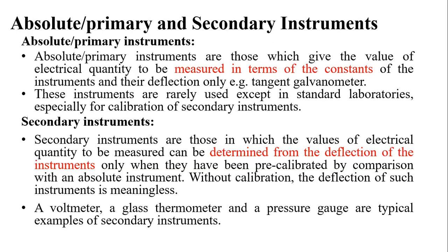Electrical instruments measuring parameters like current, voltage, power, and energy are the most essential in industry and among the oldest of all measurements. These electrical instruments are broadly divided into two categories: absolute and secondary. Secondary instruments are those in which the value of the electrical quantity to be measured can be determined from the deflection of the instrument, but only after they have been pre-calibrated by comparison with an absolute instrument. Without calibration, the deflection of such instruments is meaningless.